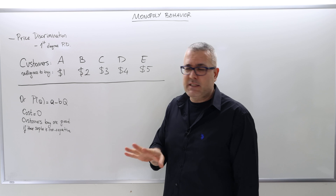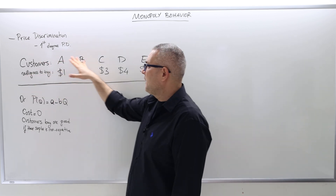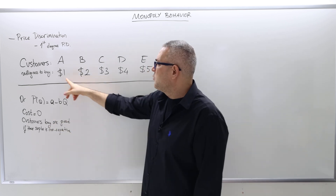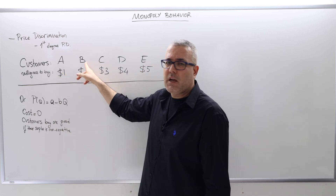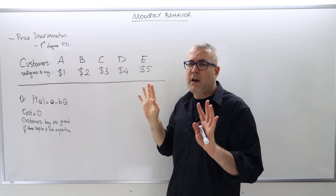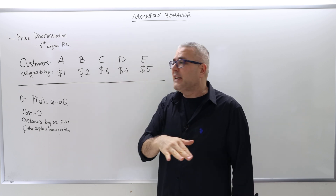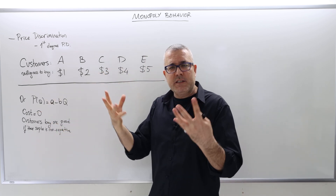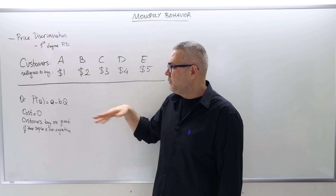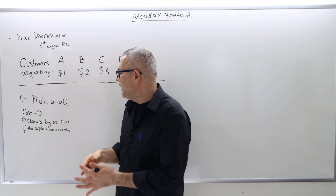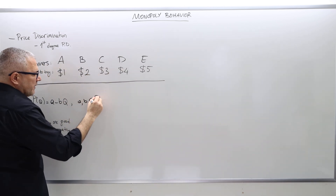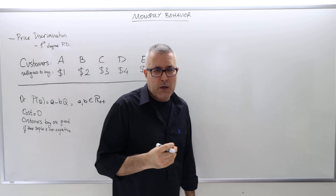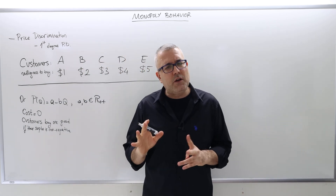Here's a numerical example. I have five customers: A, B, C, D, and E. Their willingness to pay is $1 for customer A, $2 for customer B, $3, $4, and $5 respectively — and this is all known by the monopolist. The second example uses a continuous model with many buyers represented by the demand curve P = A minus BQ, where A and B are positive real numbers. For simplicity, the cost of production for the monopolist is zero — no fixed cost, no marginal cost.